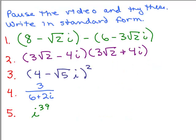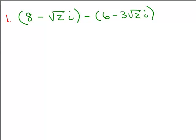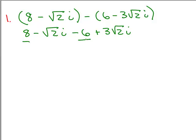Here are 5 more problems. The first one is a subtraction problem. We distribute the minus sign: minus 6, and plus 3 square roots of 2 i. Then we combine like terms — the real parts and the imaginary parts. So 8 minus 6 is 2. And negative 2i plus 3 square roots of 2 i: remember that's negative 1 square roots of 2, so the result is plus 2 square roots of 2 i.